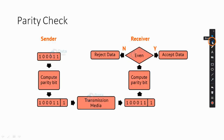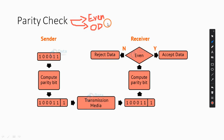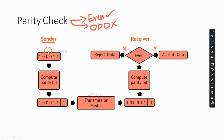In parity check we have two techniques: even parity and odd parity. We can perform parity check using either one. The process you are seeing on the screen is even parity. According to even parity, the number of ones in the data should be even.